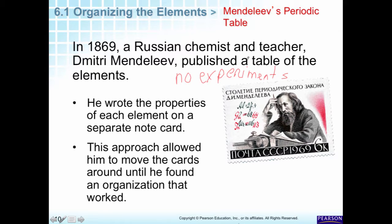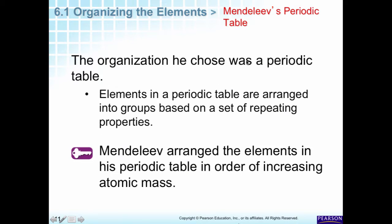Just like playing solitaire, he shuffled his deck and put all of the elements with similar properties together in groups, and was able to move these cards around until he found an organization that worked. He basically organized his groups on a set of repeating properties — just like Döbereiner noticed, there were similar properties. This is a theme coming through the periodic table: it is organized by repeating similar properties.